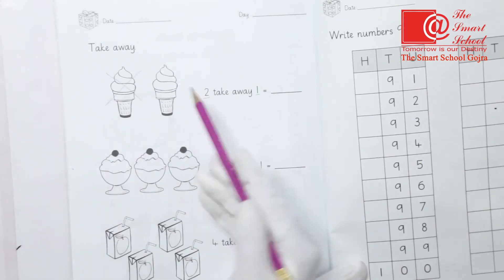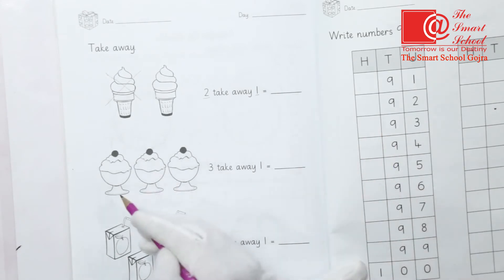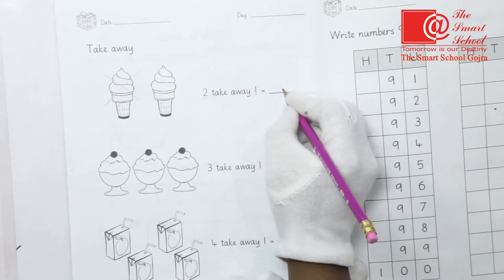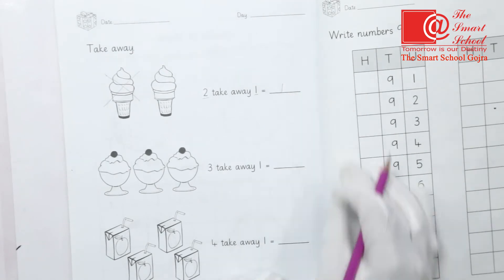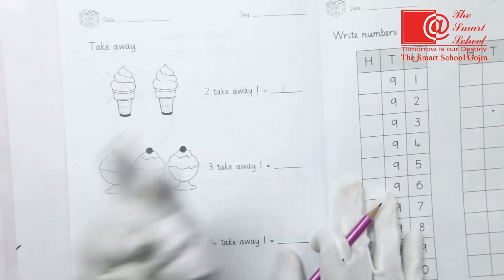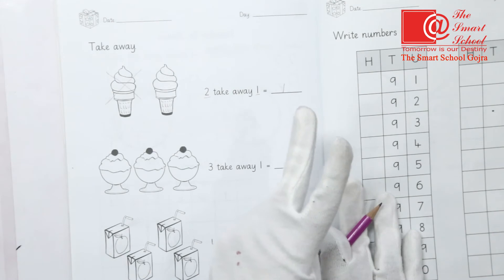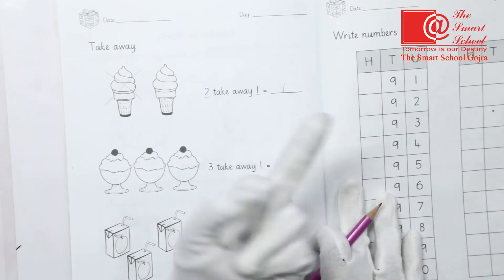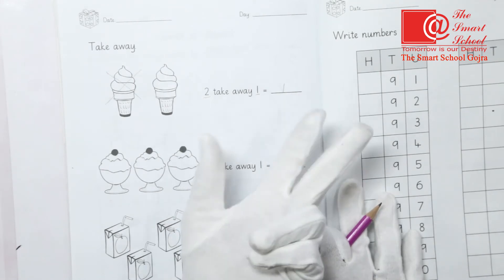When we cross one ice cream, one ice cream is left. We minus one and save one. For example, you have two fingers open — you have to minus one. Two fingers, take away one, one finger is left.